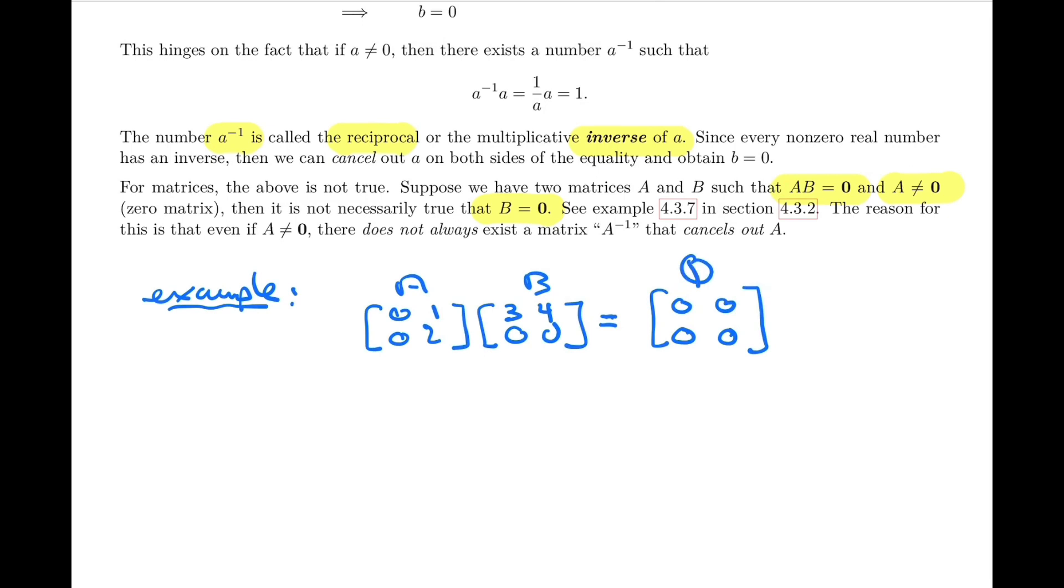So we have that AB equals the zero matrix. And we have that A is not a zero matrix. And yet, we cannot conclude that B is equal to zero. In fact, B is not equal to zero.